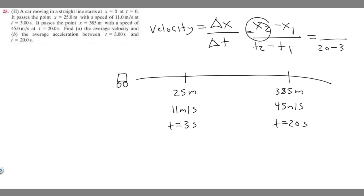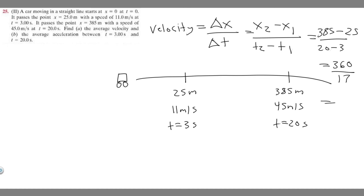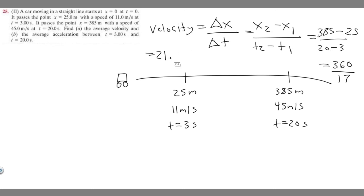We need to plug in the positions. Our final position at 20 seconds is 385 meters, as given. So it's 385 minus our position at 3 seconds — the beginning of our interval — which is 25 meters. So we have 385 minus 25 over 20 minus 3. That gives us 360 over 17. Doing this on the calculator, 360 divided by 17 gives 21.1764, which we round to 21.2. Velocity is meters per second, so the average velocity is 21.2 meters per second.